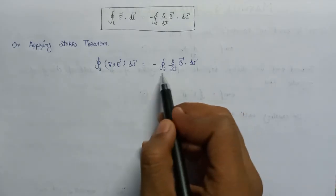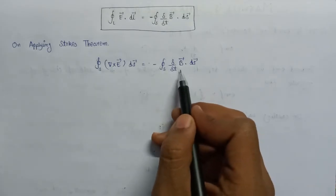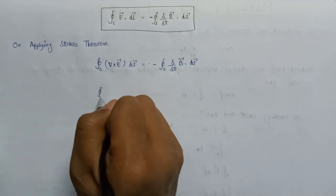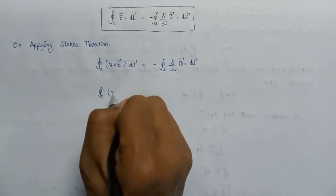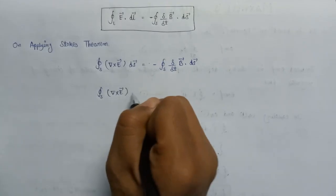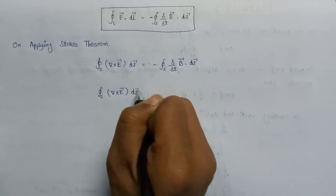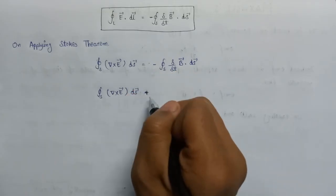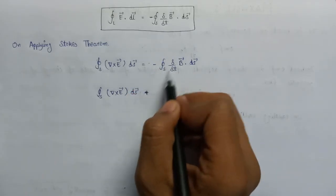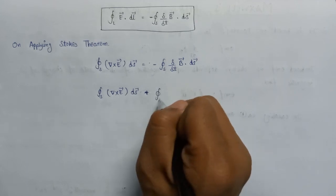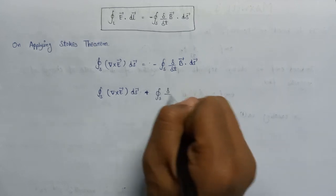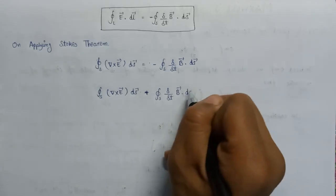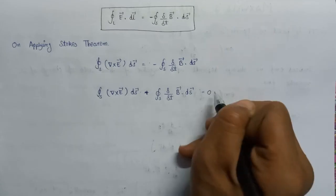Taking the right-hand side term over to the left-hand side, the negative sign becomes positive, giving us: the surface integral of (del cross E) dot dS plus the surface integral of del/del_t of B dot dS equals zero.